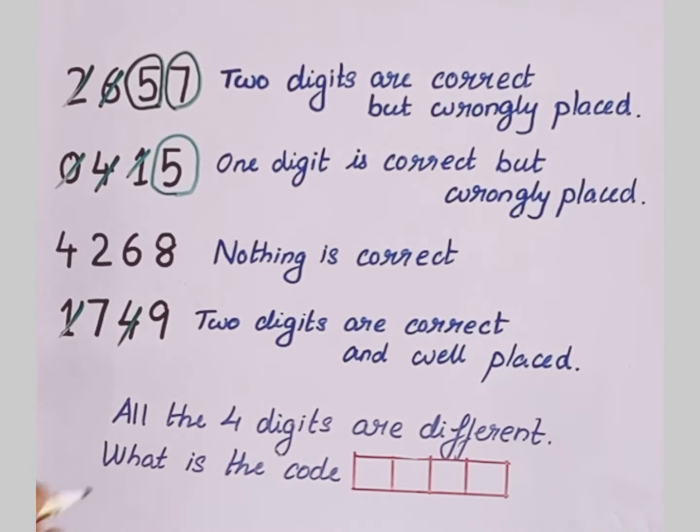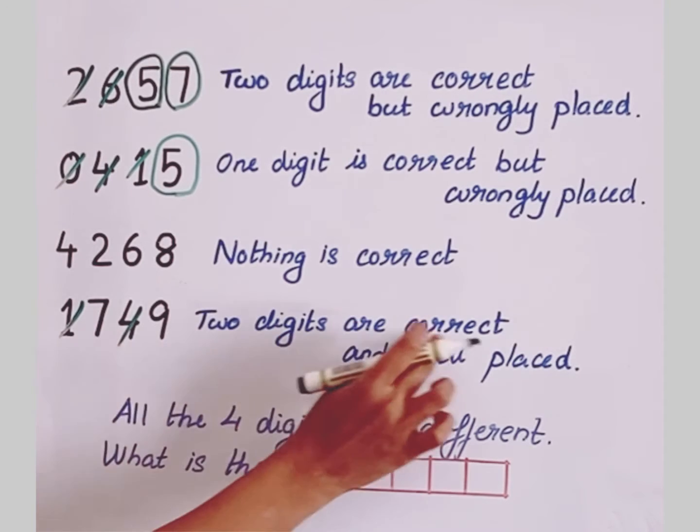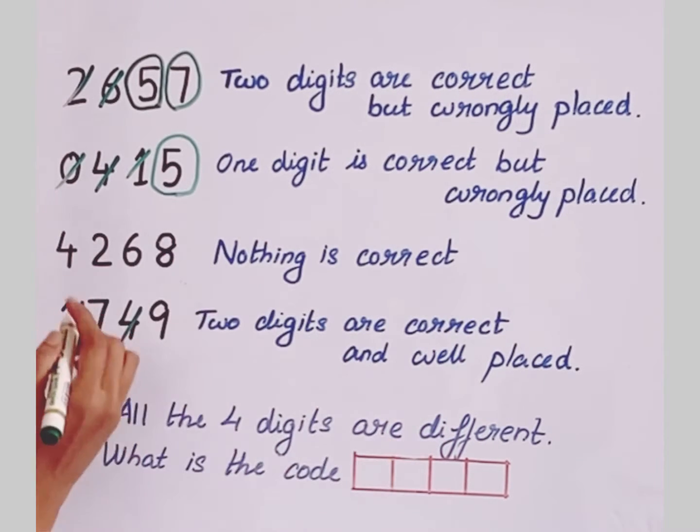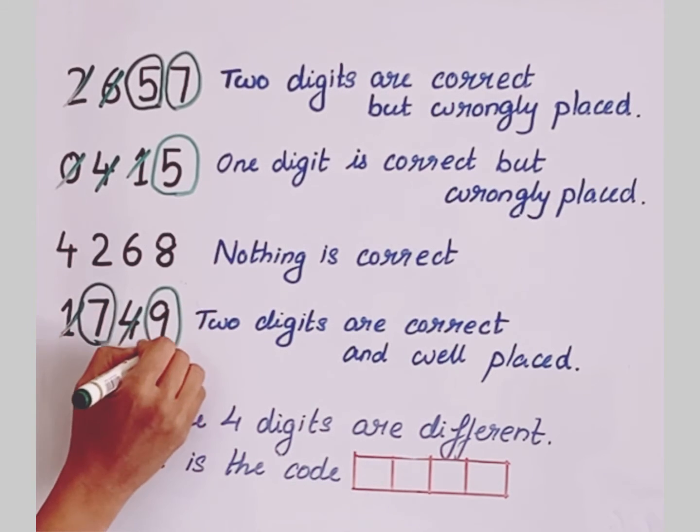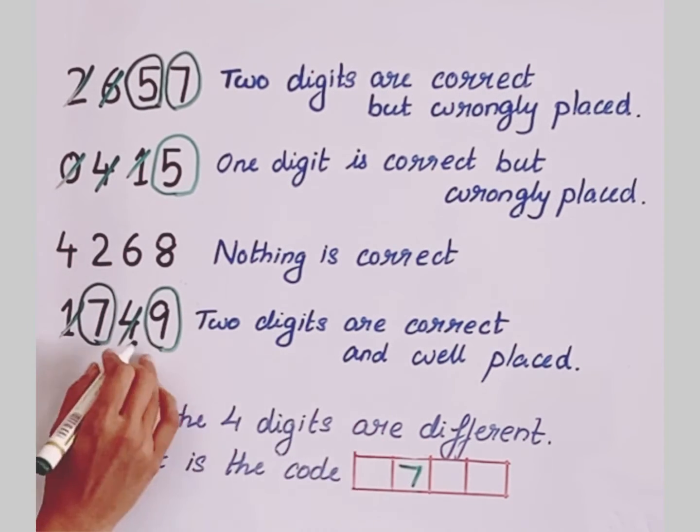And then let's move on to the last. Here it is said that the two digits are correct and well placed. They are 7 and 9. So let's take 7 and 9 and place it in the same position.